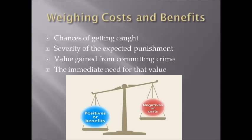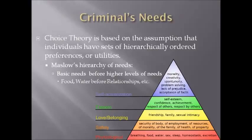The criminal uses their past experiences as well as weighing costs and benefits to determine what they will do. Research has also shown that the criminal's needs play a role in their decision. Choice Theory relies on the assumption that criminals have different levels of needs, which can be explained by Maslow's hierarchy of needs — basic needs come before others, such as shelter before relationships. For example, a criminal may rationally consider stealing food because he's hungry before stealing an iPhone simply because he wants a new cell phone.